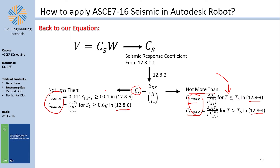To find Cs, we need to understand: SDS, R, IE, T (fundamental period), TL (long-period transition period), SD1, and related parameters. These form the checklist of items to work through.